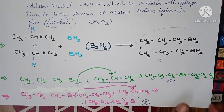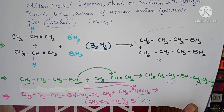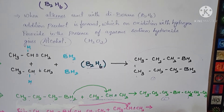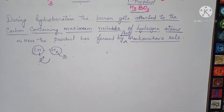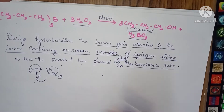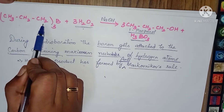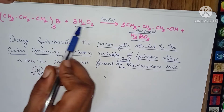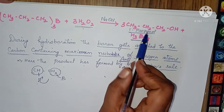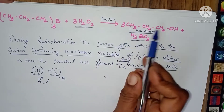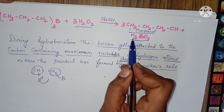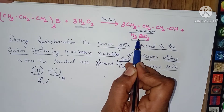So (CH3-CH2-CH2)3-B plus H2O2 in the presence of aqueous sodium hydroxide gives CH3-CH2-CH2-OH. You are getting 1-propanol and orthoboric acid is also received.